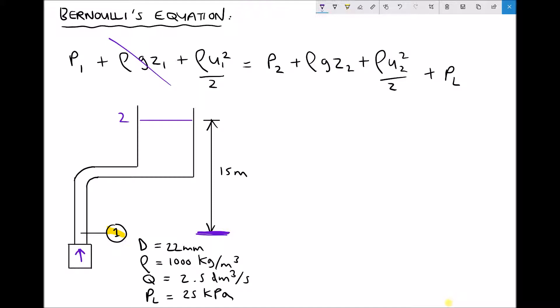Next we have rho u1 squared over 2. Well because the pump is being used to fill the tank at position 1 our fluid is going to have a velocity, it's going to be moving through the pipe like so. And that velocity can be determined because we have the volume flow rate for the fluid. And we'll talk a bit more about volume flow rate in a moment. But if there's volume flowing through the pipe then that fluid must have a velocity.